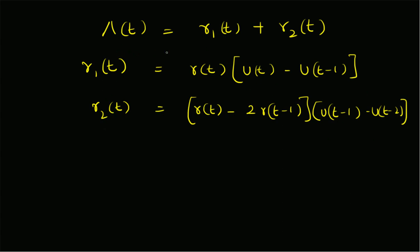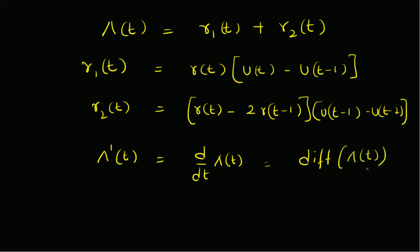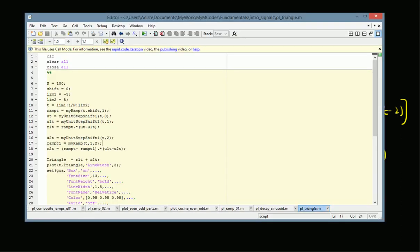Using these two definitions we can generate r1 and r2 and add them to find the triangle function. To get the derivative triangle'(t), we use an approximation in MATLAB: we use the difference function of the vector corresponding to triangle(t). Since this is a first-order discrete difference, we need to divide by the time interval delta t — that is, the sampling interval — to get the actual derivative, which represents the slope of the signal.